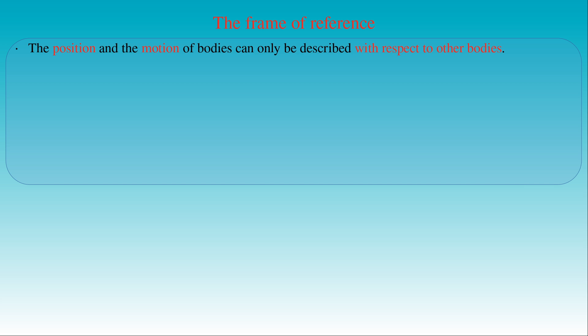In this figure a moving red ball is shown, where its motion is indicated with the green arrow. This motion is observed with respect to a group of other bodies — for example a cube, a cylinder, and a sphere — where the positions of these solids do not change with respect to each other.